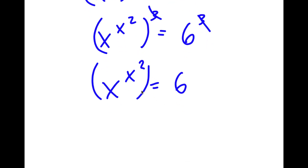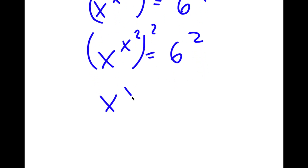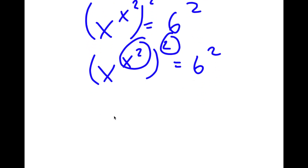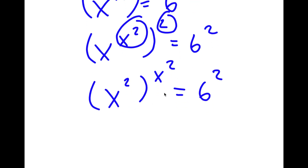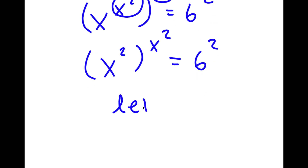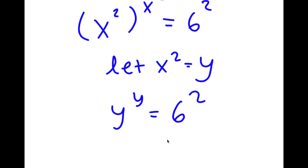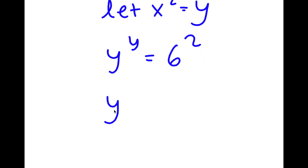Now I'm going to take the power of 2 on both sides. So now I have x to the power of x squared to the power of 2 is equal to 6 squared. Switching these two exponents, I have x squared to the power of x squared is equal to 6 squared. Now I can let x squared equal the variable y. So now I have y to the power of y is equal to 6 squared, which is 36.